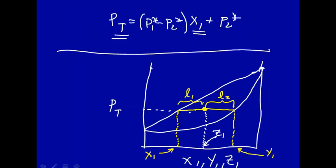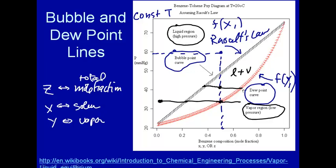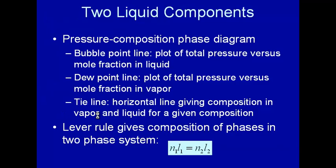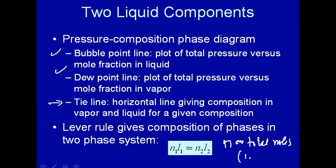So if this amount decreases here, then the number of moles has to increase, just like a lever. So we know something about tie lines and the lever rule. This is the end here — it corresponds to total moles, the moles of component 1 plus the moles of component 2. So there's a little change in notation needed: this is N in the liquid times l1 equals N in the gas phase times l2.